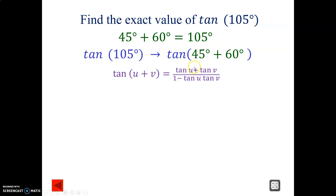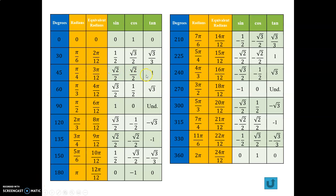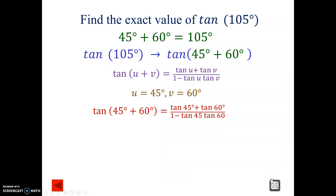For addition, that means addition on top and subtraction on the bottom. U is going to be 45 and V is going to be 60. Let's substitute everything in — there's the 45 and 60. We just need tan 60, since we already know tan 45 is one. Tangent of 60 is radical three. Substituting: one times radical three on the bottom.